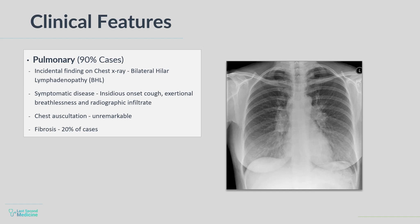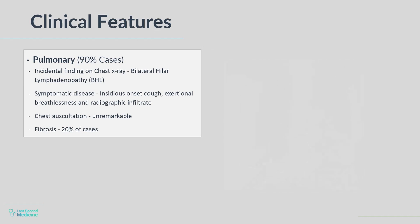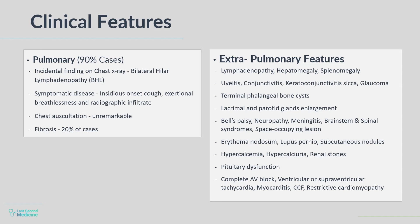Clinical features of sarcoidosis in other organs include lymphadenopathy, hepatomegaly, splenomegaly, uveitis, conjunctivitis, keratoconjunctivitis sicca, glaucoma, terminal phalangeal bone cysts, enlargement of lacrimal and parotid glands, Bell's palsy, neuropathy, meningitis, brainstem and spinal syndromes, space-occupying lesion, erythema nodosum, lupus pernio, subcutaneous nodules, hypercalcemia, hypercalciuria, renal stones, and pituitary dysfunction.